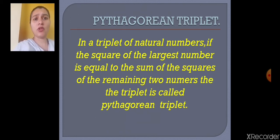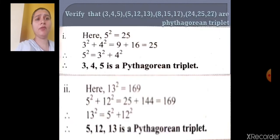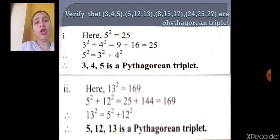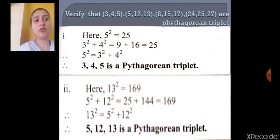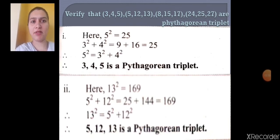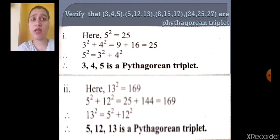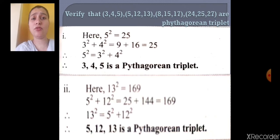Let me show how to solve these sums. You have to verify whether 3,4,5 is a Pythagorean Triplet. First, find the biggest number — that is 5. So 5 squared equals 25. Then 3 squared plus 4 squared equals 9 plus 16, which equals 25. Therefore, 5 squared equals 3 squared plus 4 squared.